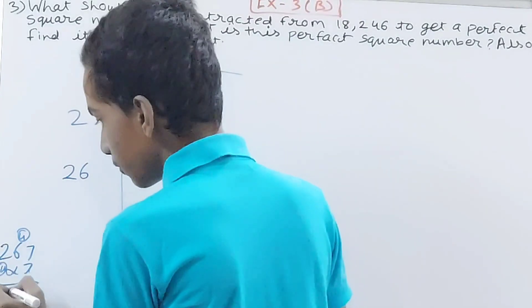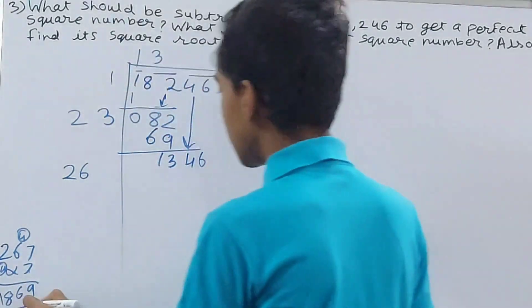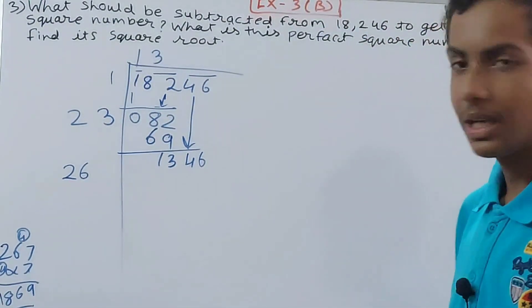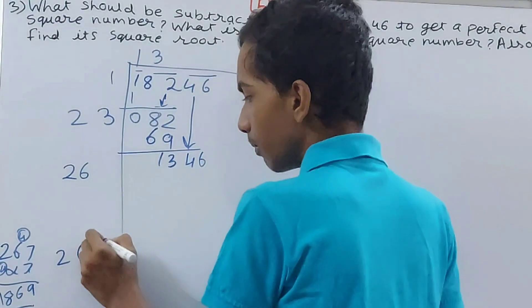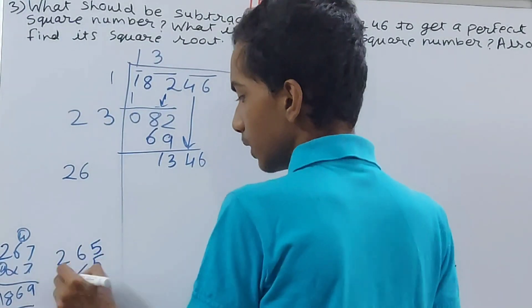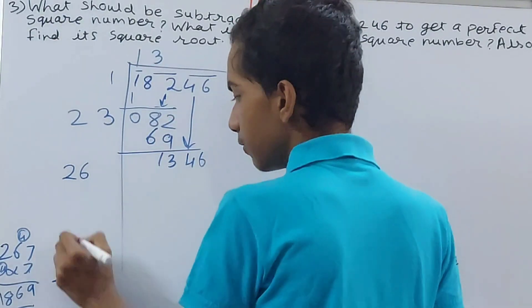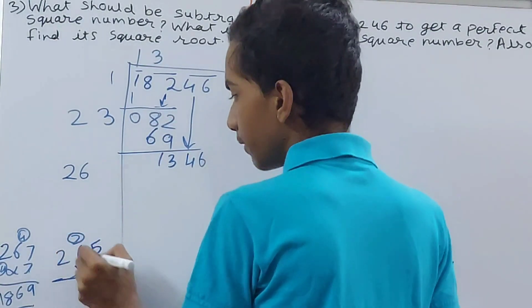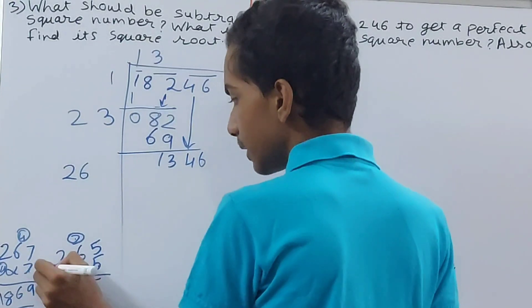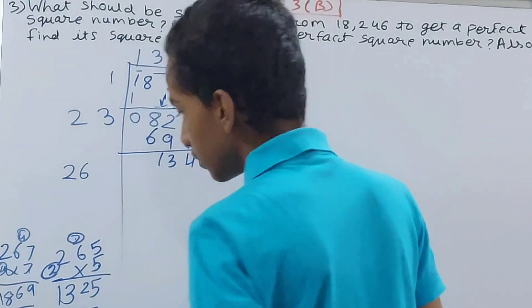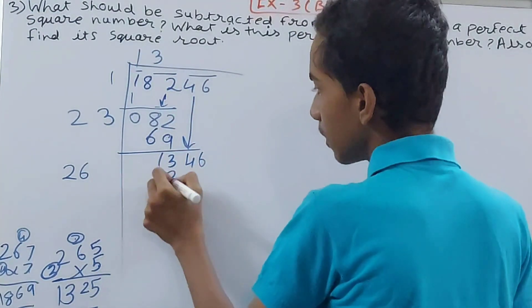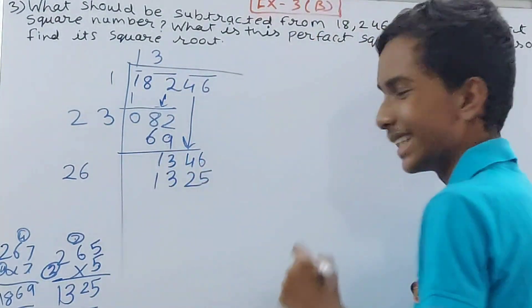So let's see by 5 if it will go or not. 5 into 5, 5, 26, 5, 32, 32 and 3, 5 to the 10 and 3, 13, 1325, which will go. Remember, we don't want exact value because this is not a perfect square.